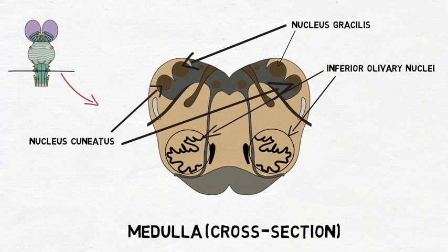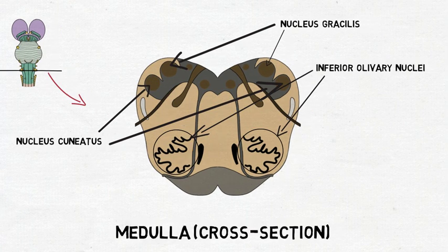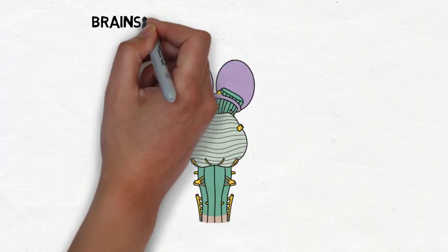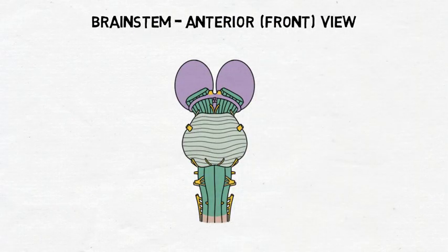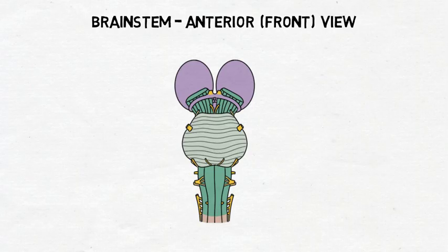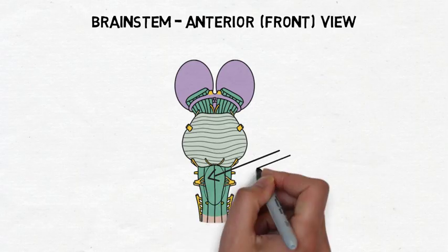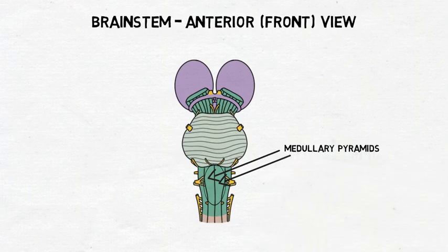A number of cranial nerve nuclei are also found in the medulla. The medulla contains a number of tracts that pass from the brainstem to the spinal cord and vice versa. The corticospinal tract and corticobulbar tracts, important tracts for movement, form triangular bundles of fibers in the medulla that create ridges on the outside of the brainstem. These bundles and ridges have been termed the medullary pyramids, and because of this, the corticospinal and corticobulbar tracts are often referred to as the pyramidal tracts.